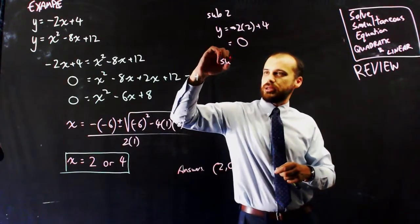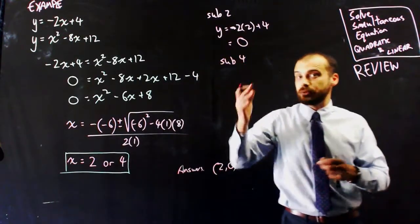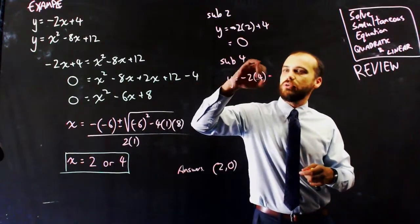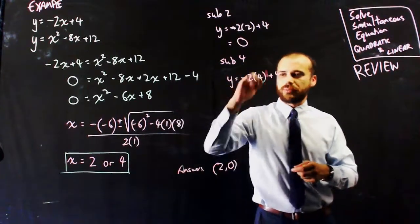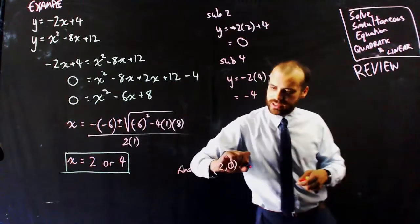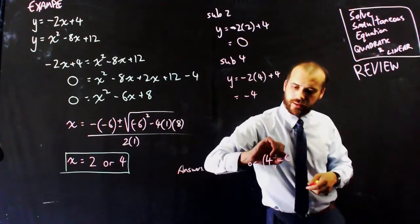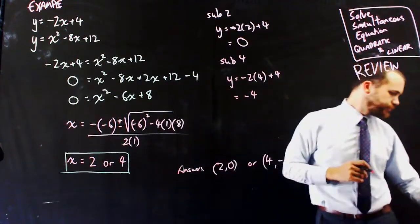And if I sub in x = 4, I get y = -2(4) + 4, which is -8 + 4, which is -4. So the second answer is (4, -4).